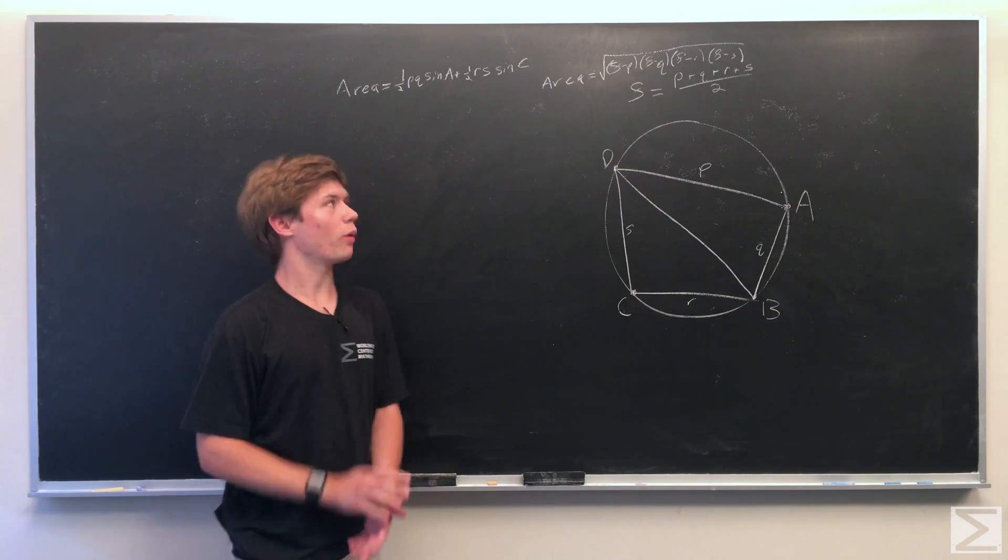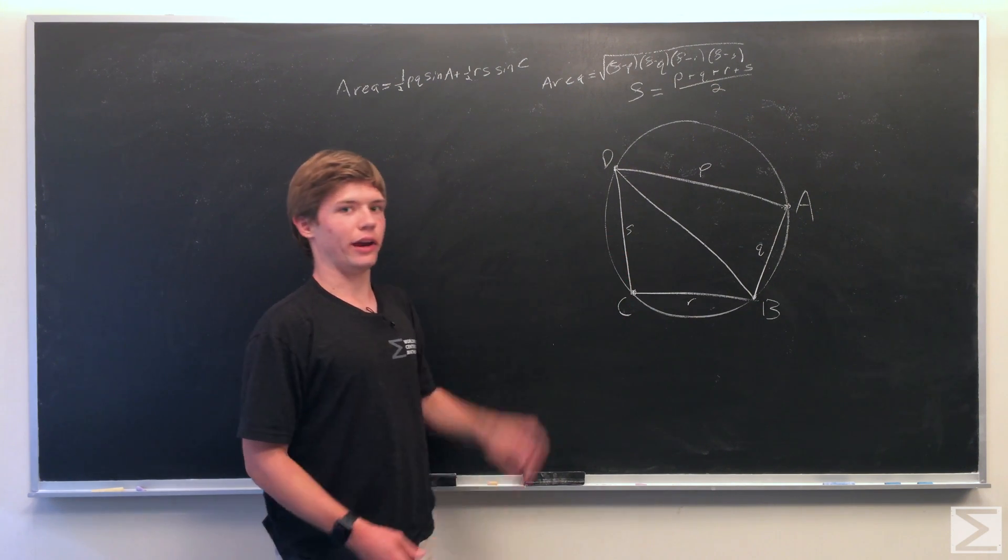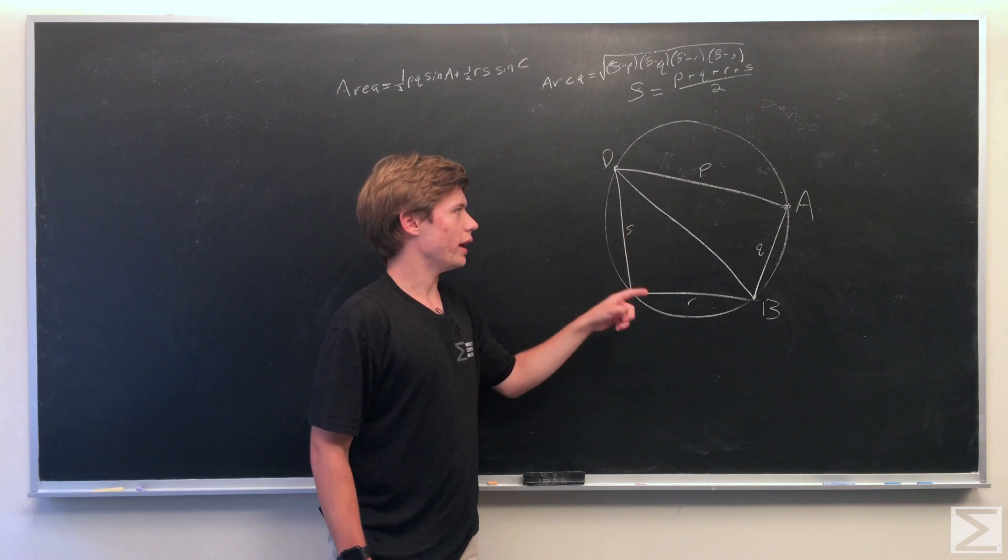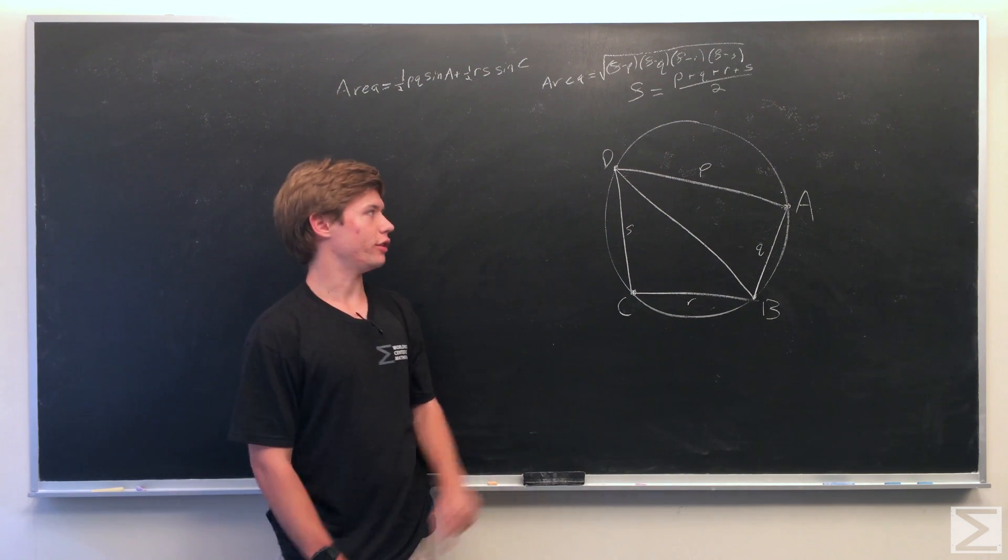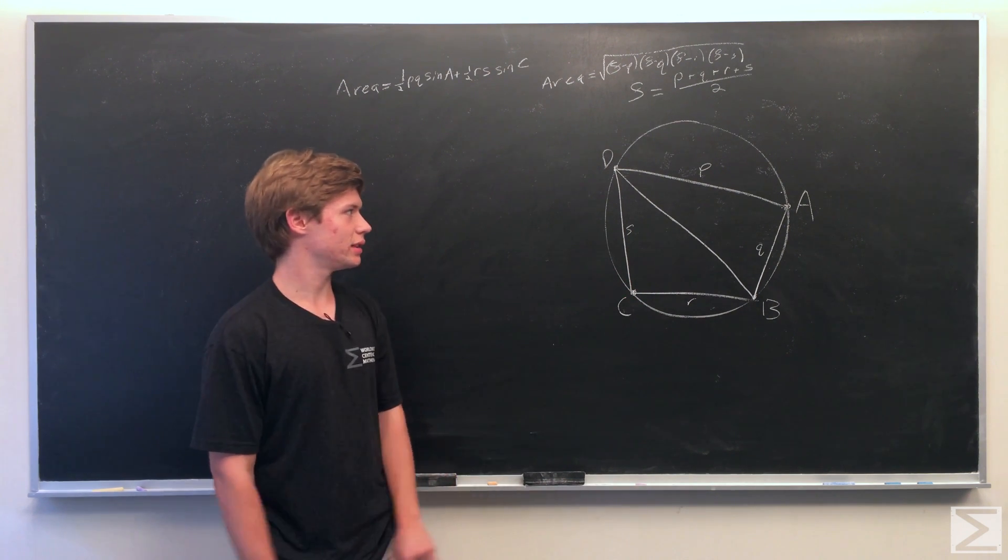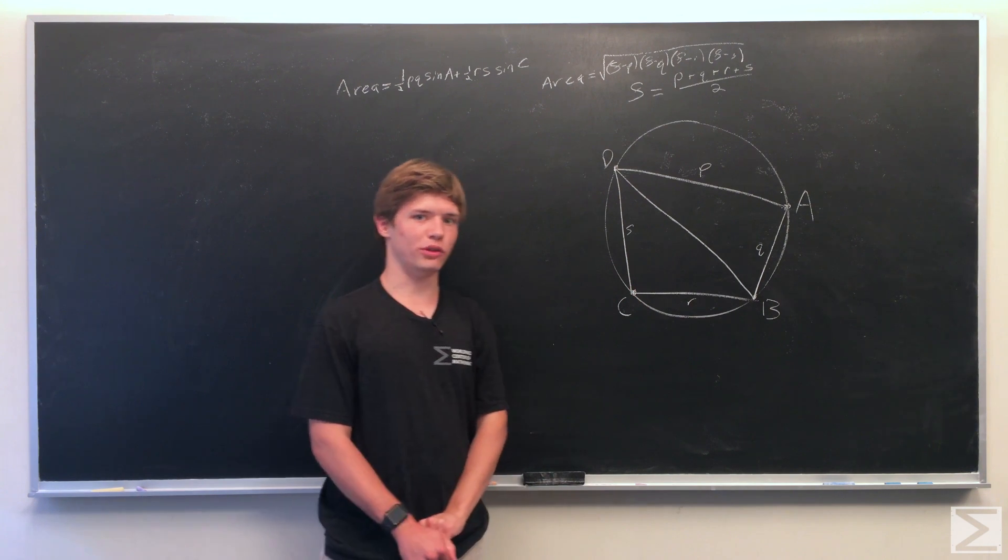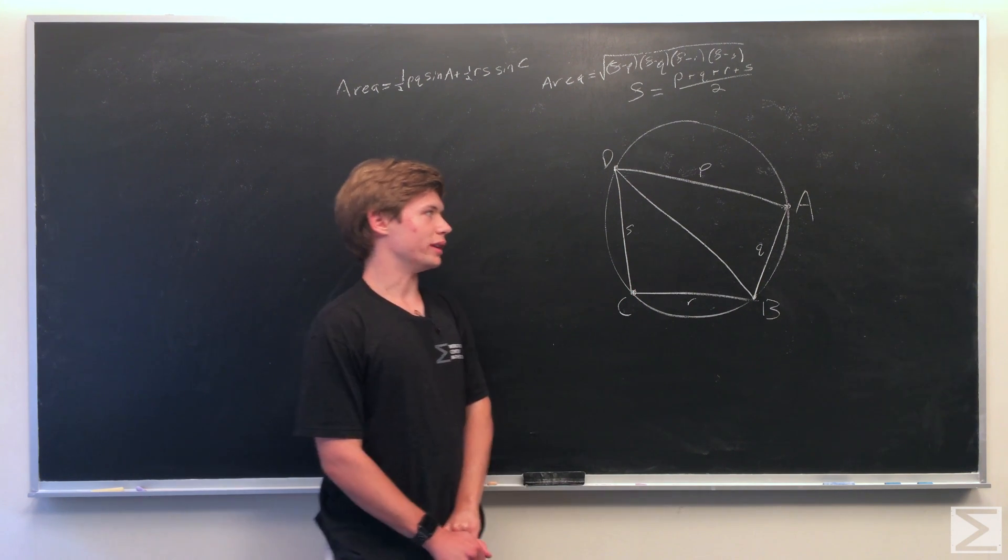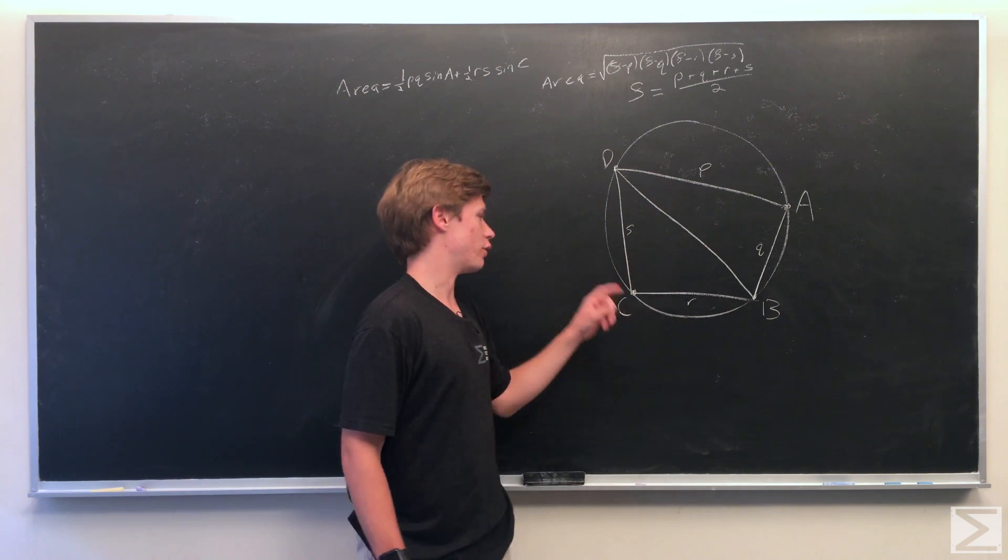It's pretty straightforward, just the area of triangle BCD and the area of triangle ABD. We know that by definition this quadrilateral is cyclical, so we can say that angle a is complementary to angle c. Using this property, we can say that the sine of a is therefore equal to sine c.